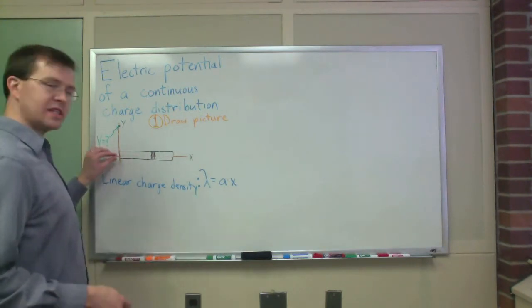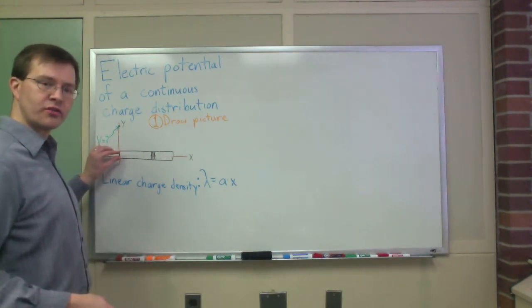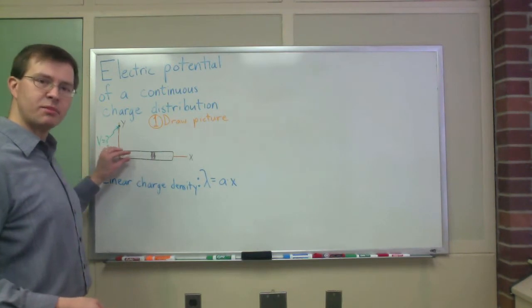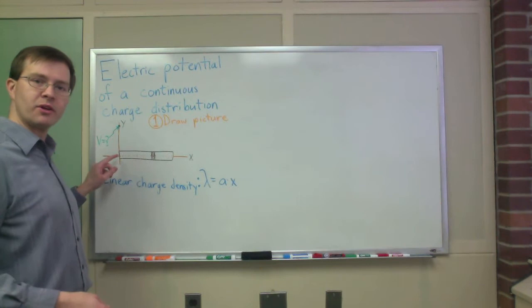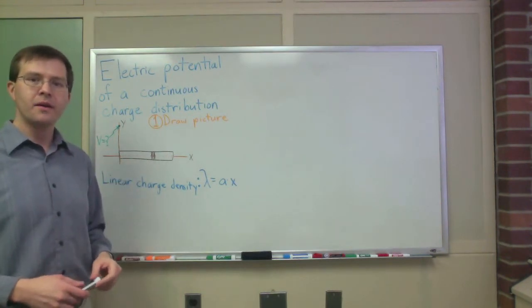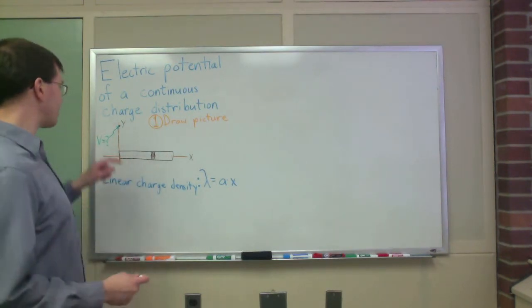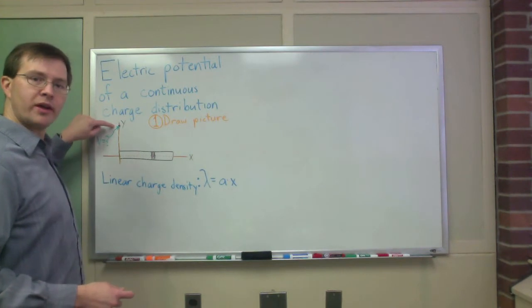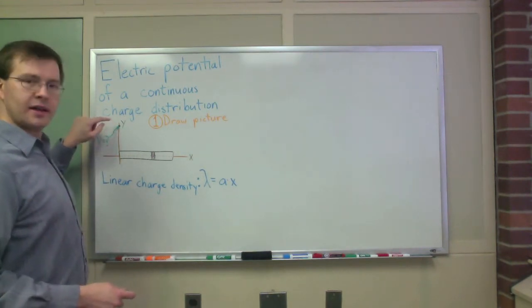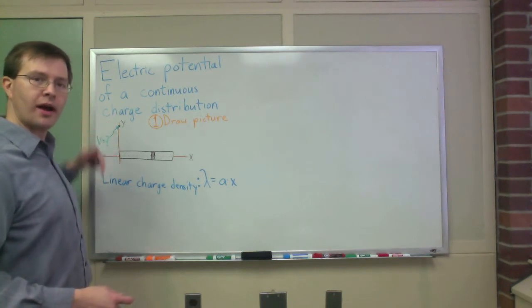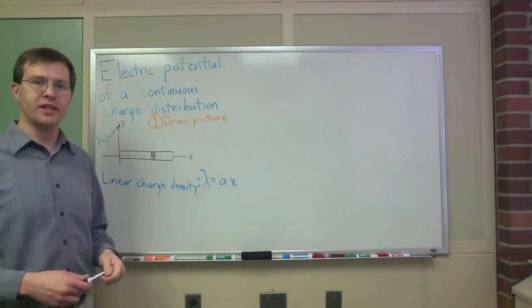So there's no charge density at this end, essentially no charge over there, but the charge density gets bigger and bigger as we go to the right. There's a lot of charge on the right-hand side and not very much on the left. My question is, what is the electric potential V at a point located at height y, position y, at x equals zero above one end of the rod?